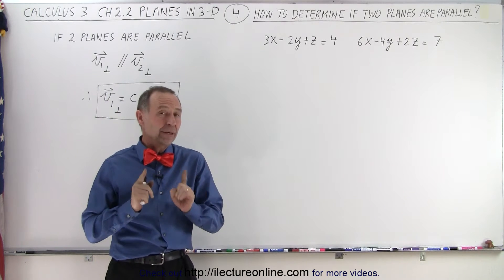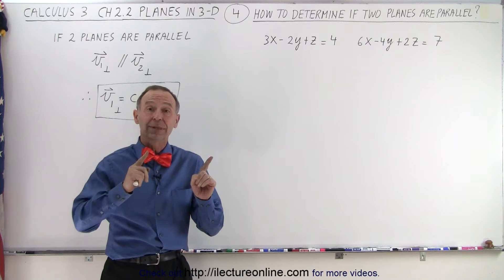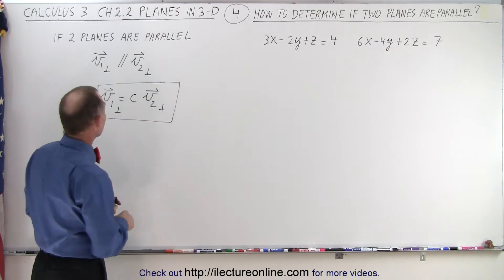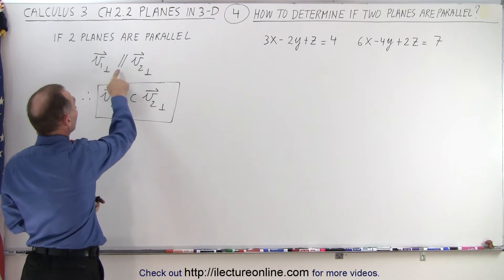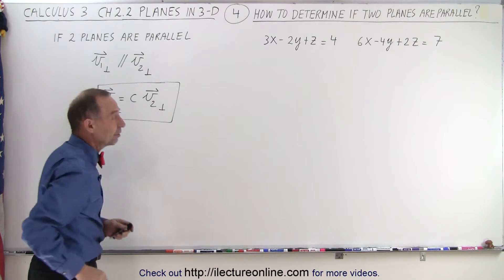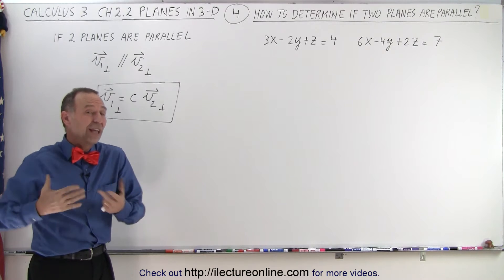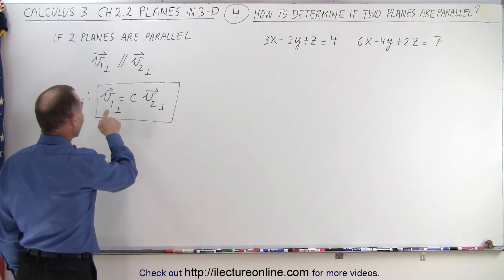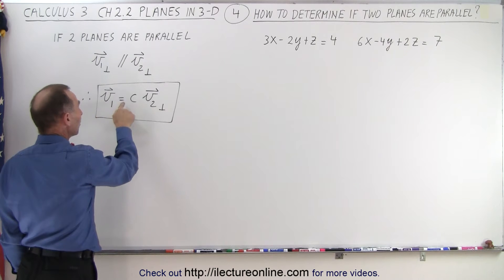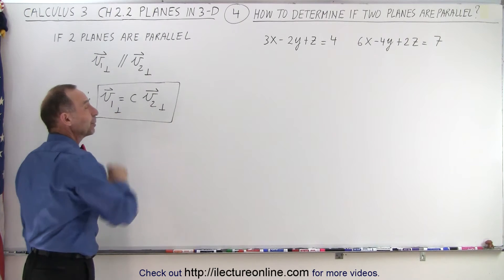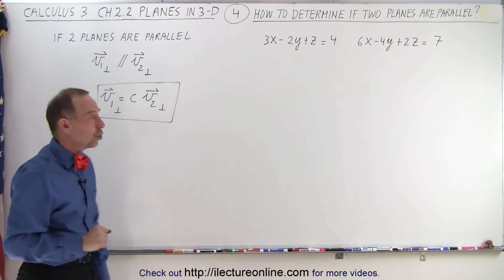If two planes are parallel to one another, then their perpendicular vectors must also be parallel to one another. So we can say that the perpendicular vector of plane 1 must be parallel to the perpendicular vector of plane 2, which then means that we can write that the perpendicular vector of plane 1 must be equal to some constant times the perpendicular vector of plane 2.